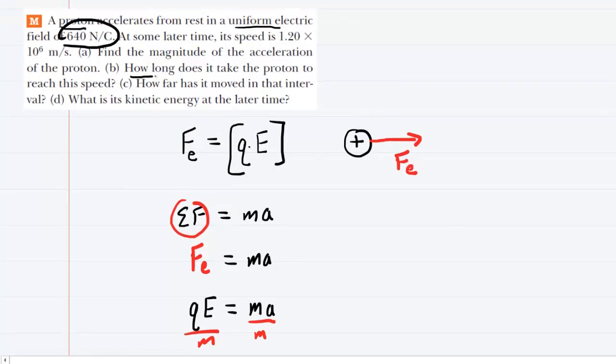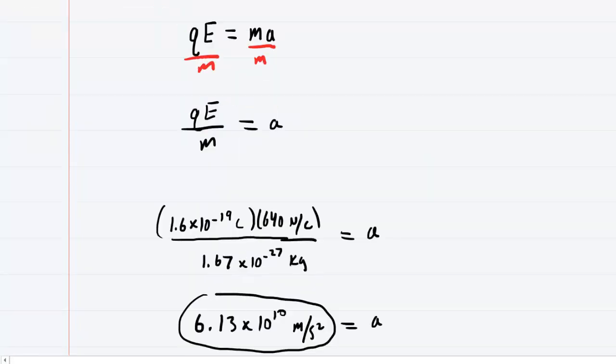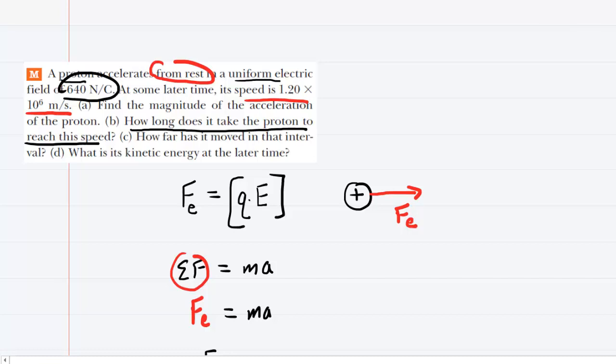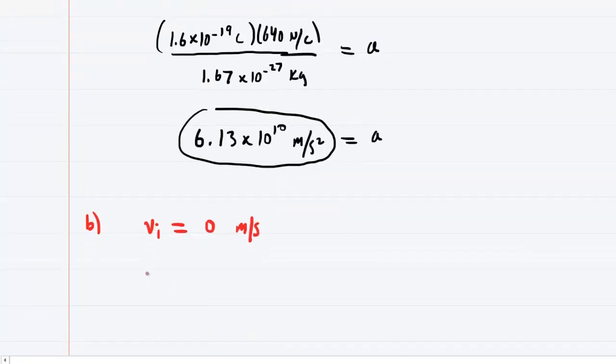Going on to part B, how long does it take the proton to reach this speed? Well, this speed would be the 1.2 times 10 to the sixth meters per second. Recall that the proton started from rest, so that would indicate that the initial velocity of the proton would equal 0 meters per second. We're accelerating it up to a speed again of 1.2 times 10 to the sixth. So you can say that the final speed is 1.2 times 10 to the sixth meters per second.